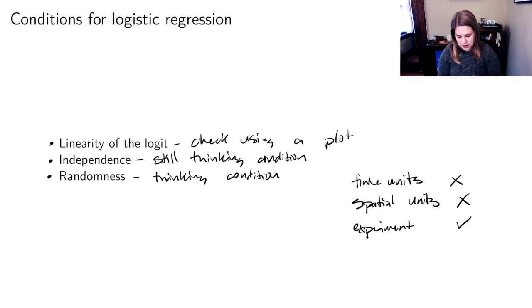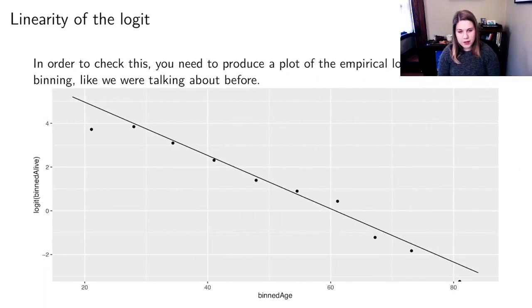So those are the two thinking conditions. The last one is the one that you can check using plot, but the problem here is that you can't just do something like plot m1, like we did for linear regression, and have a plot nicely come from R.